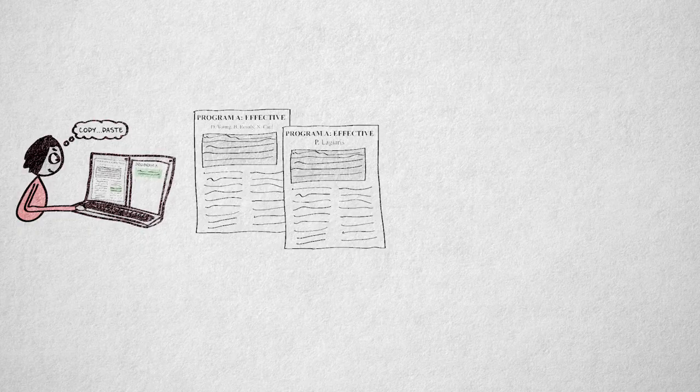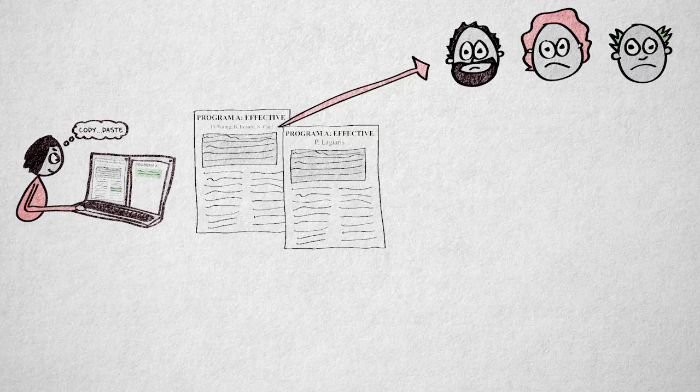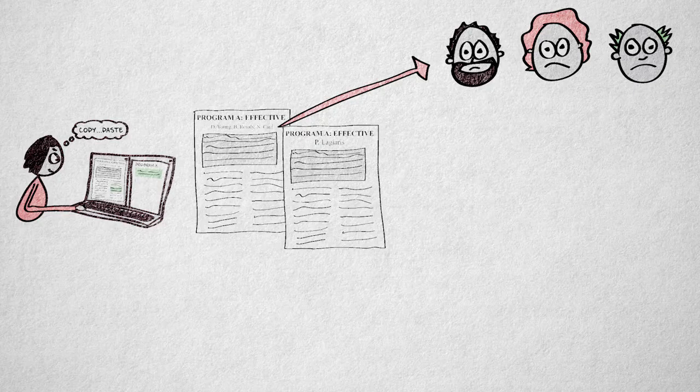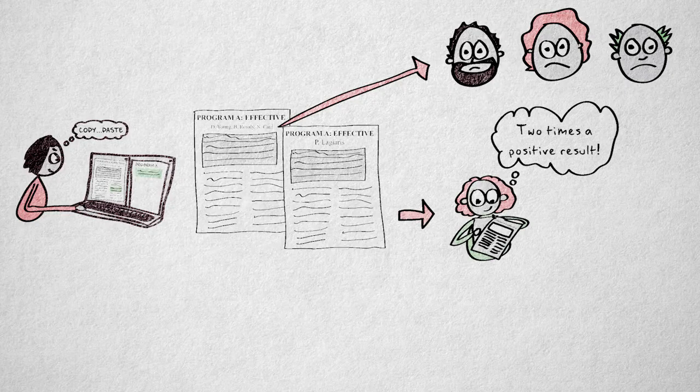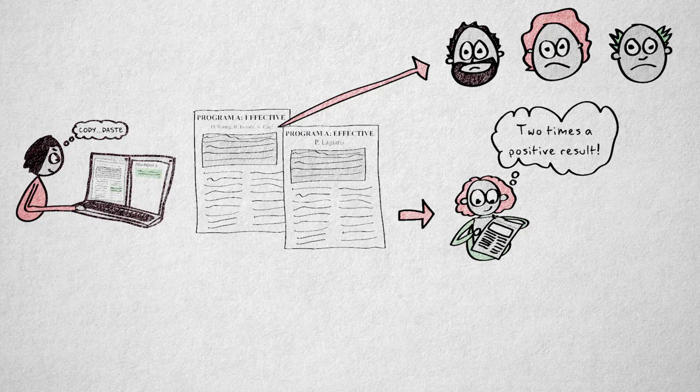Besides the obvious infringement on someone else's intellectual property, plagiarism contaminates the scientific literature with redundant information. If a study is plagiarized and presented as a separate independent study, this could create the impression that a finding is more robust than it really is. Unknowing readers might interpret the plagiarized study as a successful replication when the two studies are, in fact, one and the same.